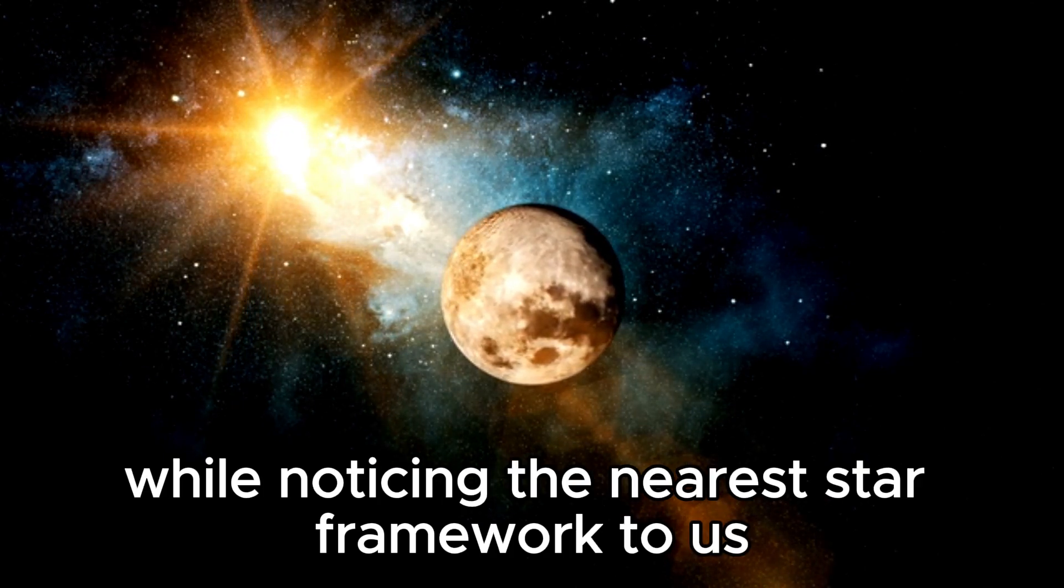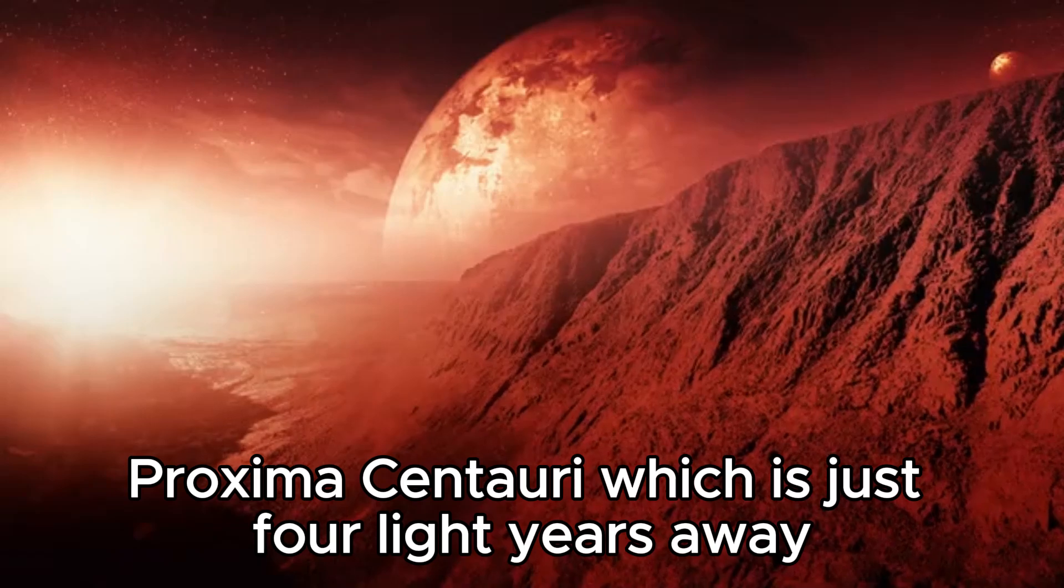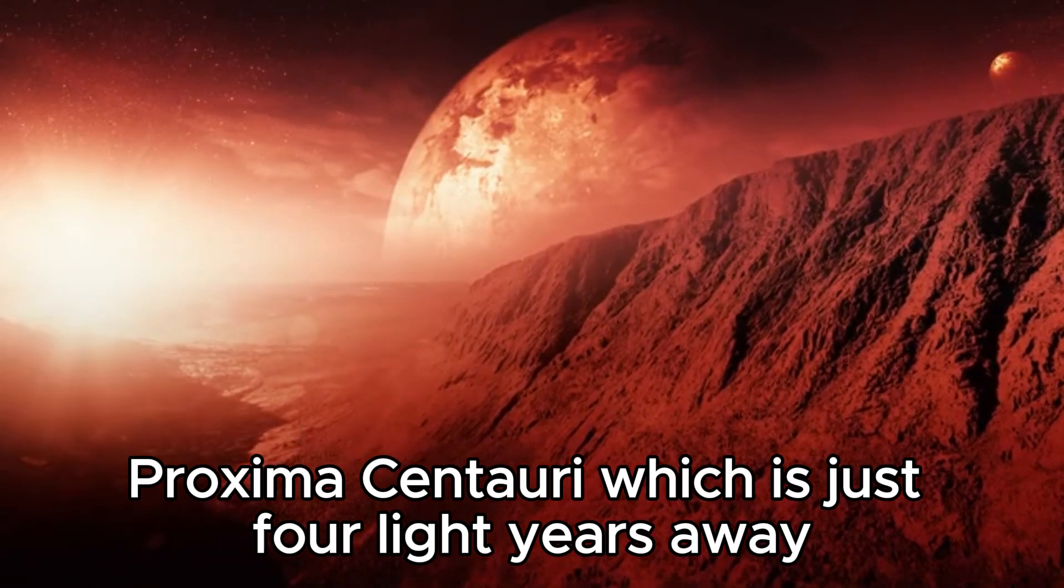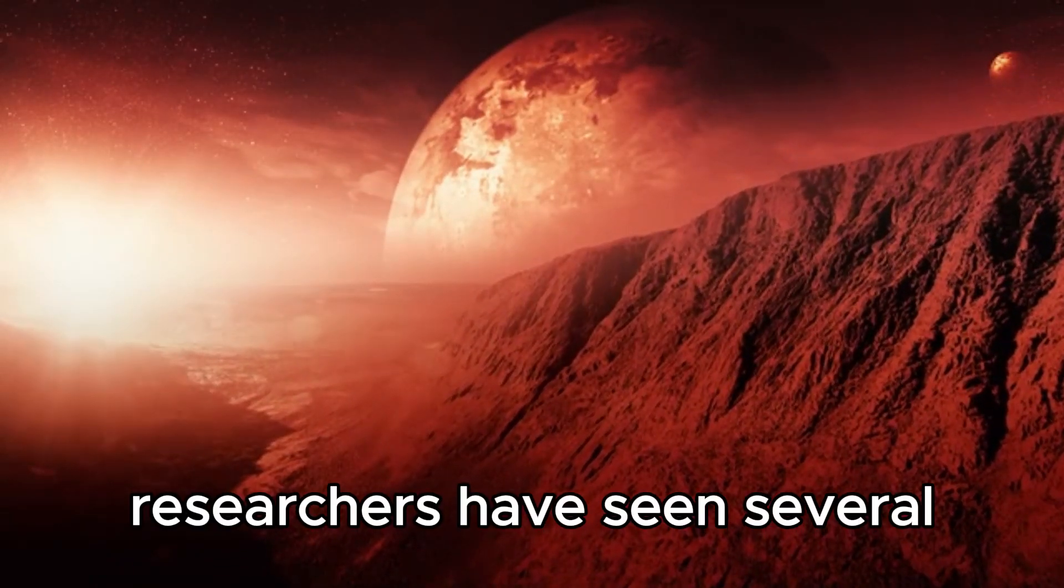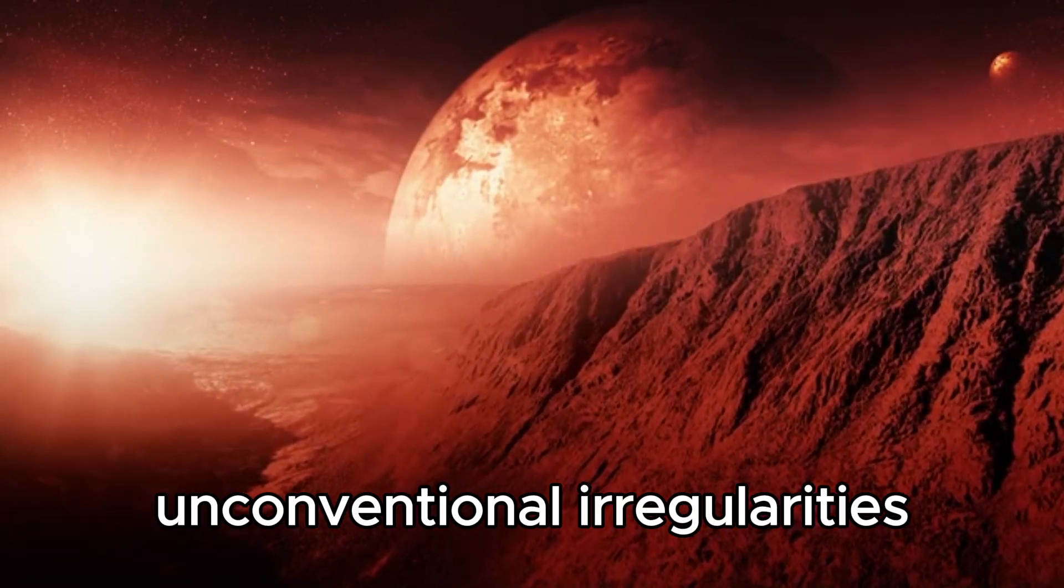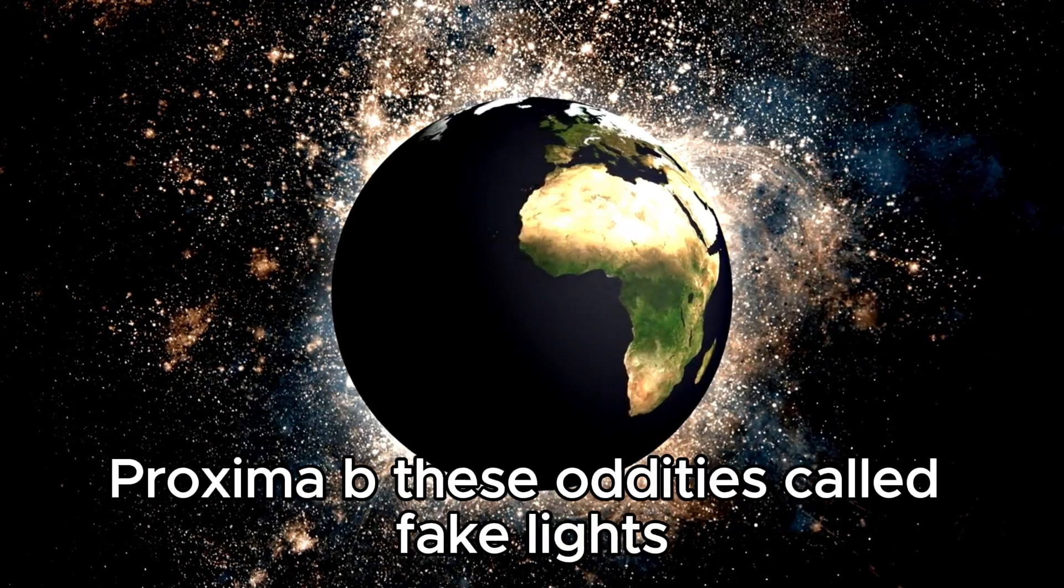While observing the nearest star system to us, Proxima Centauri, which is just four light years away, researchers have seen several unconventional irregularities from one of the planets in the system, Proxima b.